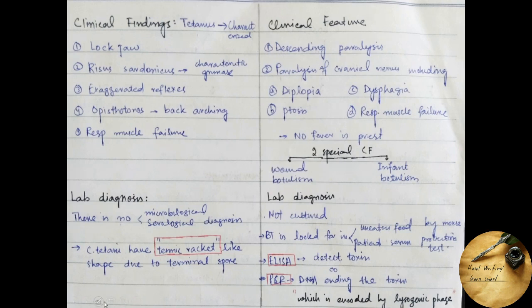Coming towards the clinical findings, Clostridium tetani causes tetanus which is characterized by lockjaw, risus sardonicus which is a characteristic grimace, exaggerated reflexes, opisthotonus which is back arching, and respiratory muscle failure which is the most common cause of death due to Clostridium tetani disease.